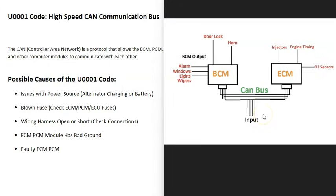You can think of the CAN bus like Ethernet inside of a home, connecting a bunch of computers that are all networked together. When you get a U0001 code, the computer is seeing that there's some kind of problem — that all the computer modules are not communicating correctly.